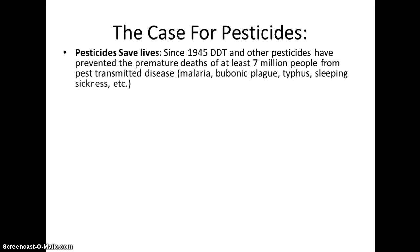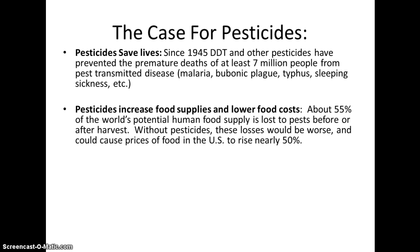Pesticides are a necessary thing because they do save lives. Since we started using DDT back in 1945 to kill mosquitoes and other disease vectors like malaria, plague, and typhus, it has helped prevent the deaths of approximately 7 million people. We also use pesticides to increase our food supplies; since we cannot create more arable land, we need to maximize yield per unit of land, which also helps lower food costs.